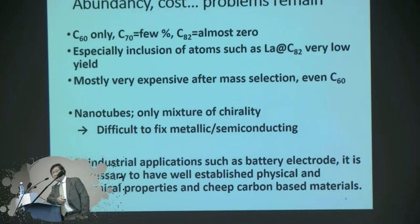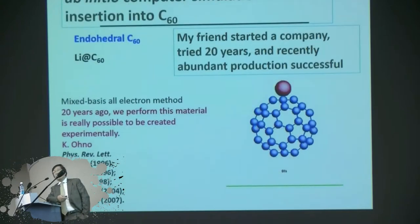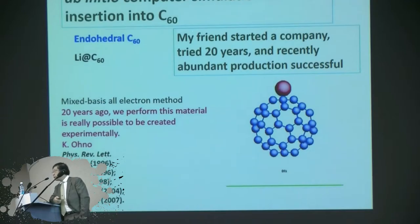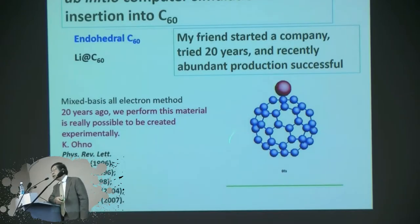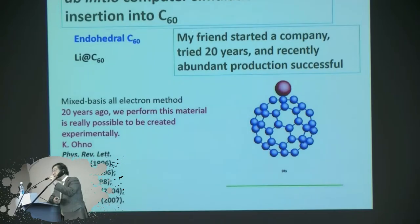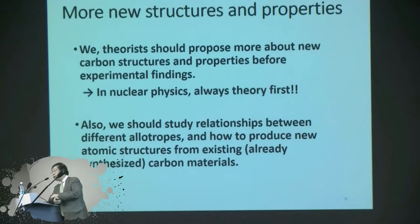Same thing for graphene also. Industry applications such as battery electrodes — something we should consider from the very basic. This is one which we proposed about 20 years ago: a metallic ion included inside C60. At that time, it was not possible to make this kind of thing, because C60 is easily formed by arc discharge, and this kind of structure is never found. Only C82 containing something, but this abundance is almost zero.